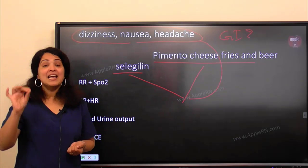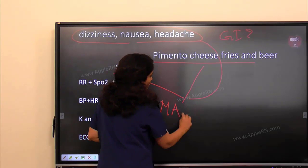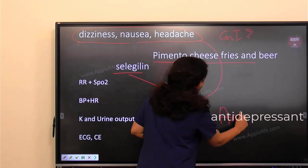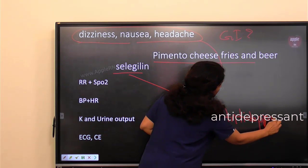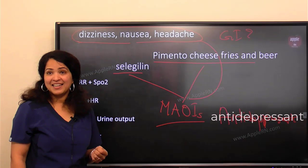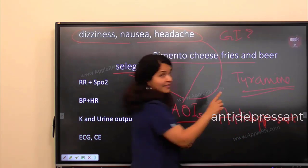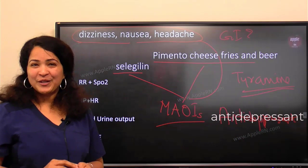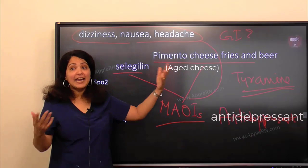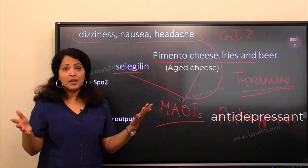To answer that, we need to remember what selegiline is. If you look at the pharmacology flashcards, there is a very important note: selegiline is an MAOI — a monoamine oxidase inhibitor — which is an antidepressant. What do we know about MAOI medications? They should avoid tyramine-rich food. Does this meal fall under tyramine-rich food? Yes — pimento cheese uses aged cheese, which is fermented, and beer is fermented — both are tyramine-rich.